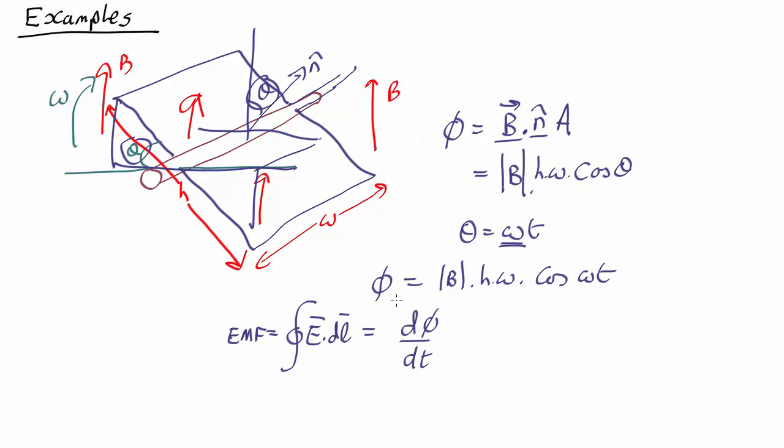What is d phi by dt? Well we can just differentiate phi. So B is a constant, h is a constant, omega is a constant. The only thing that's not a constant is cos omega t. And if you differentiate cos you get sine.